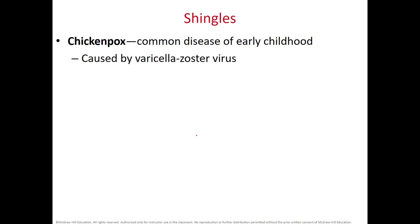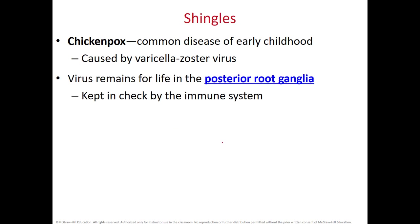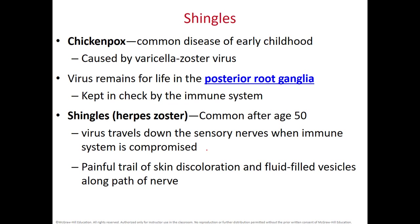Chickenpox is a very common childhood disease caused by a virus that stays with you, hiding in the posterior root ganglion and usually kept in check by your immune system. However, it can re-emerge as shingles — the same virus — when your immune system is suppressed, often due to stress. It's common after age 50 but can occur in younger people. The virus travels down the sensory nerves and causes very painful vesicles on your skin.